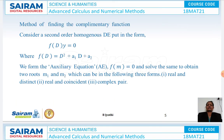Now to find the method of finding the complementary function, let us consider a second order homogeneous differential equation. Put in the form f(D)y = 0, where f(D) is D² plus a₁D plus a₂. We form the auxiliary equation f(m) = 0 and solve to obtain the roots m₁ and m₂.